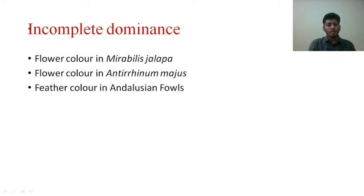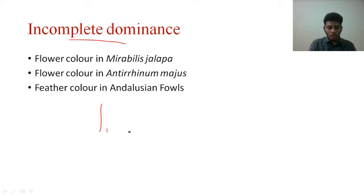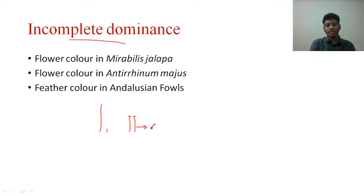Today we will study incomplete dominance in detail. According to the law of dominance, in the heterozygous condition the dominant allele expresses completely and the recessive one does not express. But in incomplete dominance, the dominant allele expresses only partially, and the recessive allele also tries to express partially. The half-expression of both alleles together corresponds to a new character — that is what we study under incomplete dominance.